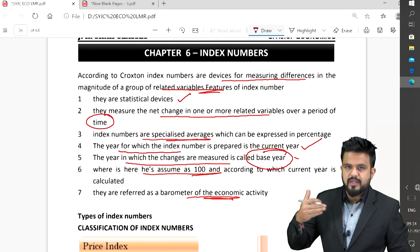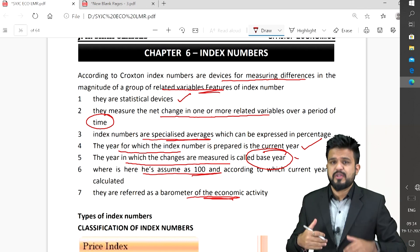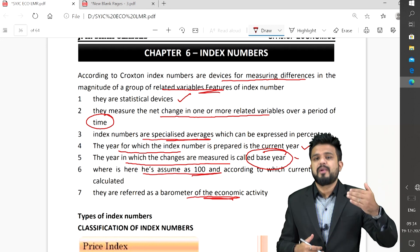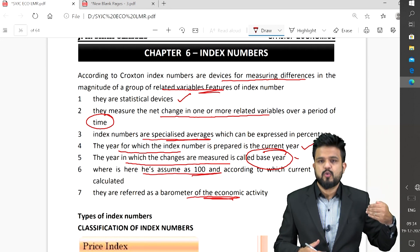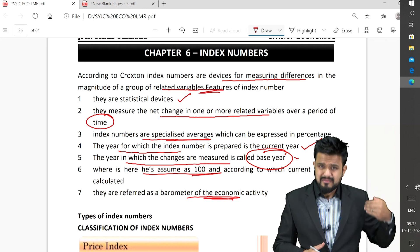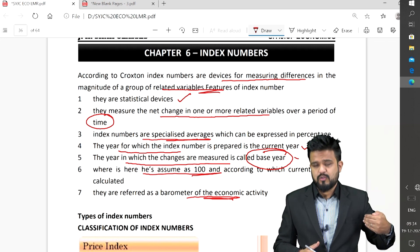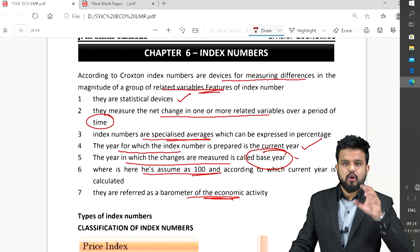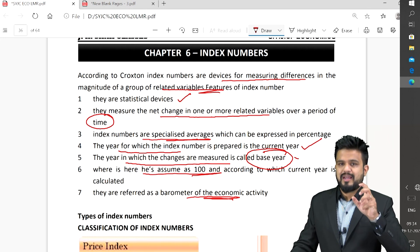They are referred as barometer of economic activity. Changes in GDP, national income, inflation, consumption, total savings, total investment, all these are expressed in number terms. Previously what was the total investment, now it is how much, last year same period what was the stock market, today what stock market is doing. All these comparisons, all these numerical calculations can be done through index numbers.